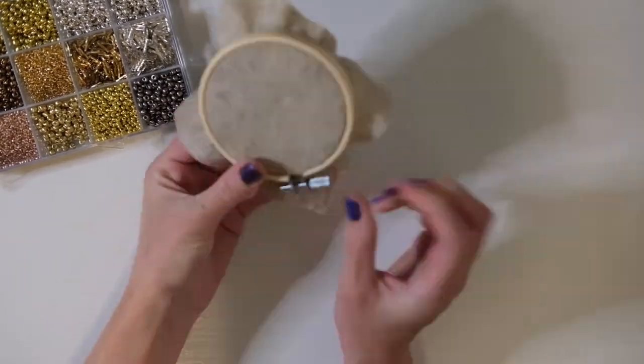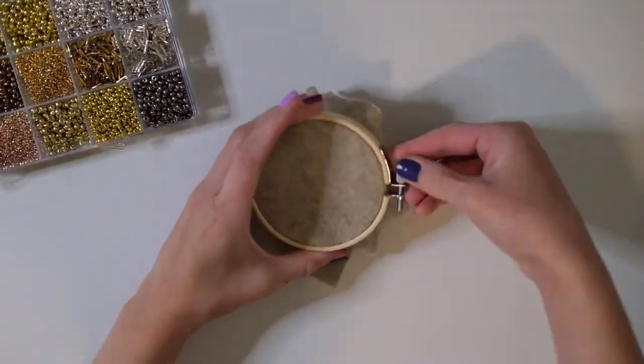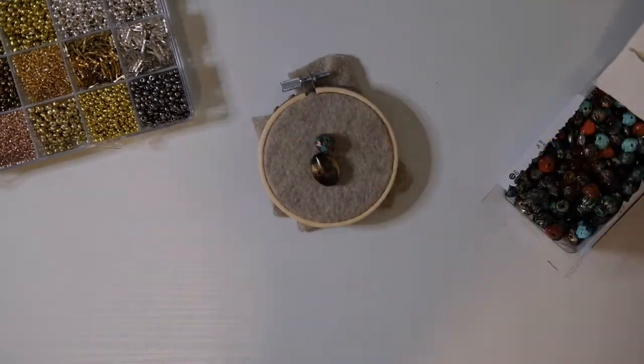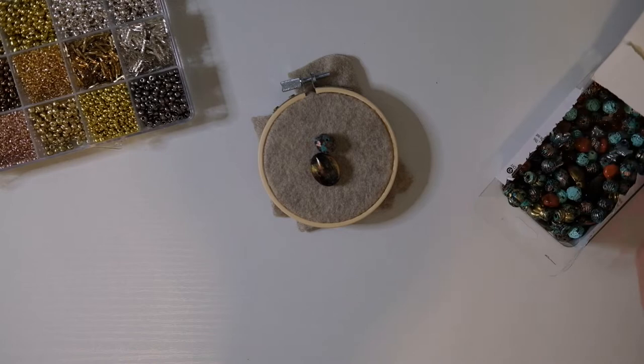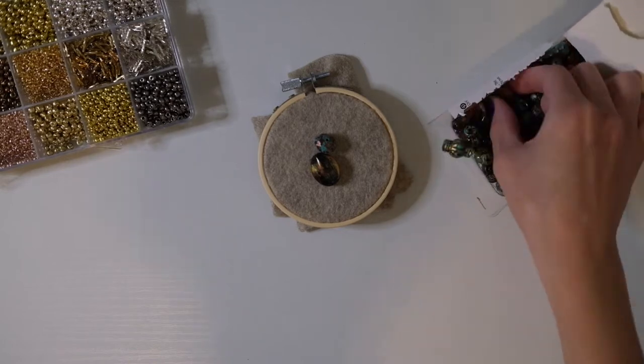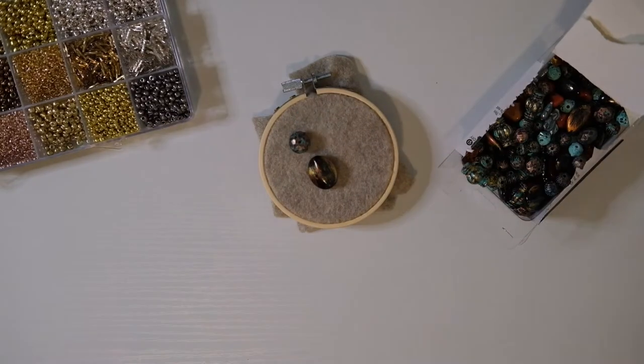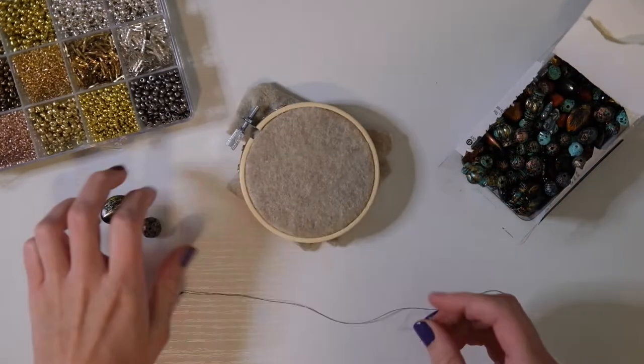Once the felt is secured in place, I'm just mapping out which beads I want to start with. For this first design I want to make a spider, so I'm trying to figure out the right size beads to use for the body and the head of the spider. Once I have that sorted out, I'm just going to go ahead and stitch these on using a needle and thread.